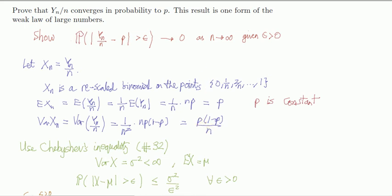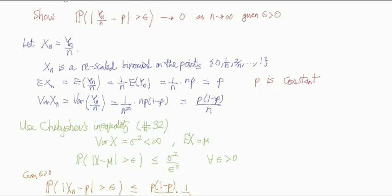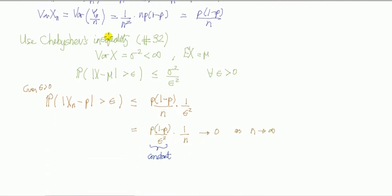Then we recognize the following: that this random variable xn has a mean of p, and basically it matches this left-hand side in this absolute sign, and that suggests using Chebyshev's. So from problem 32, we proved Chebyshev's inequality.